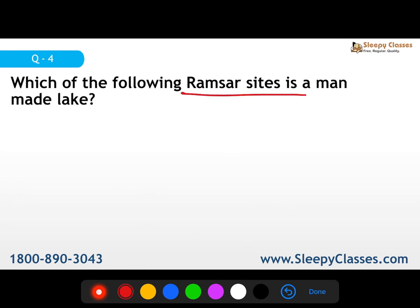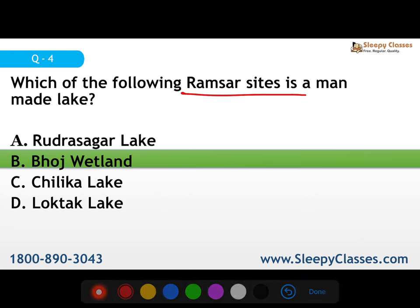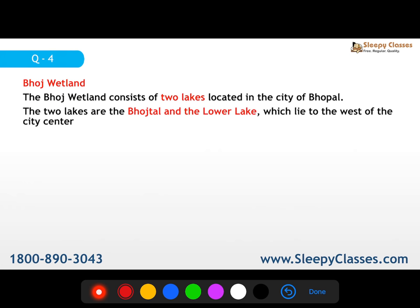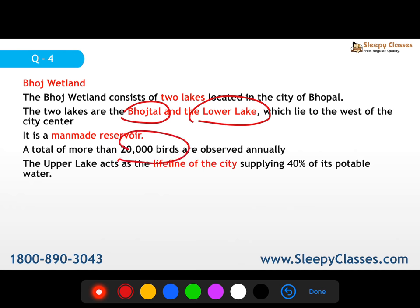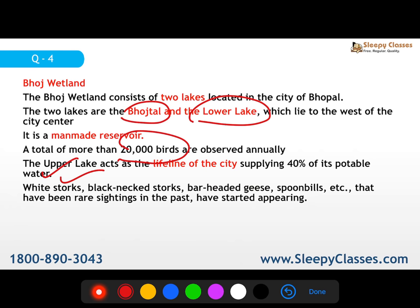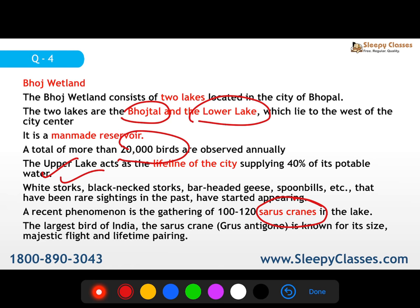The next question: which of the following Ramsar sites is a man-made lake? Options are Rudrasagar Lake, Bhoj Wetland, Chilika Lake, and Loktak Lake. The correct answer is Bhoj Wetland in Madhya Pradesh — it is a man-made reservoir. Bhoj Wetland has two lakes: Upper Lake and Lower Lake. About 20,000 birds are observed annually there. The Upper Lake is the lifeline of the city, providing 40% of its potable drinking water. The site has white storks, black-necked storks, and even sarus cranes — the world's largest flying bird in India, known for its majestic flight and lifetime pairing.